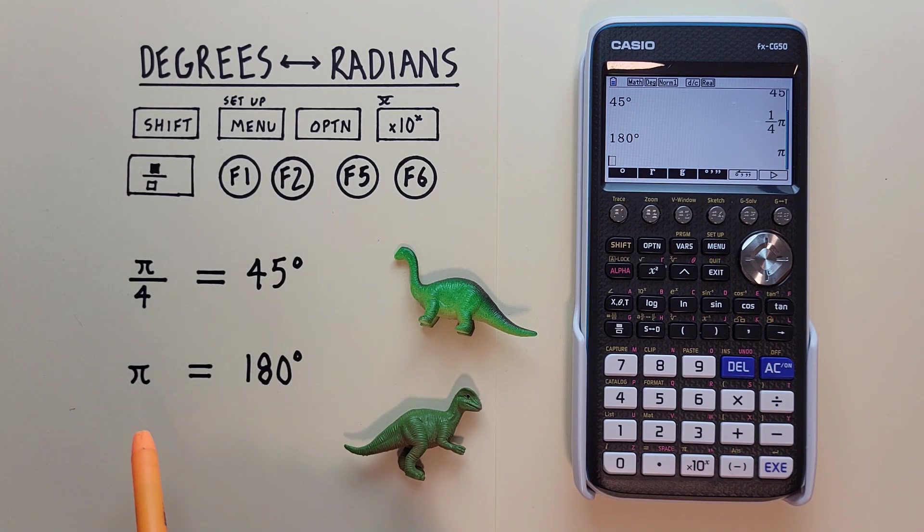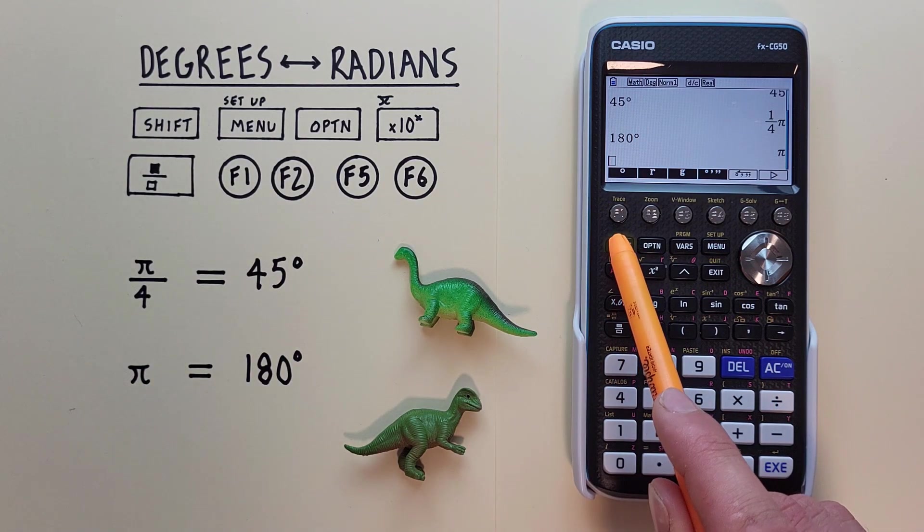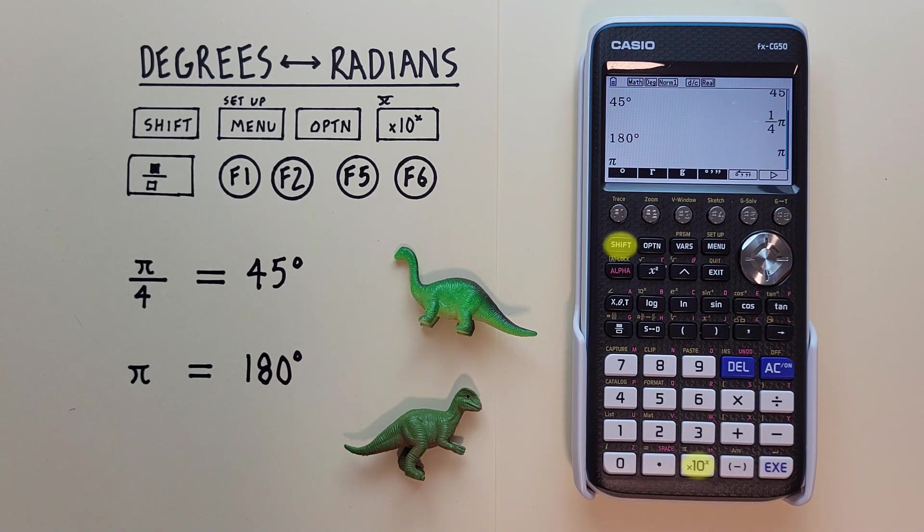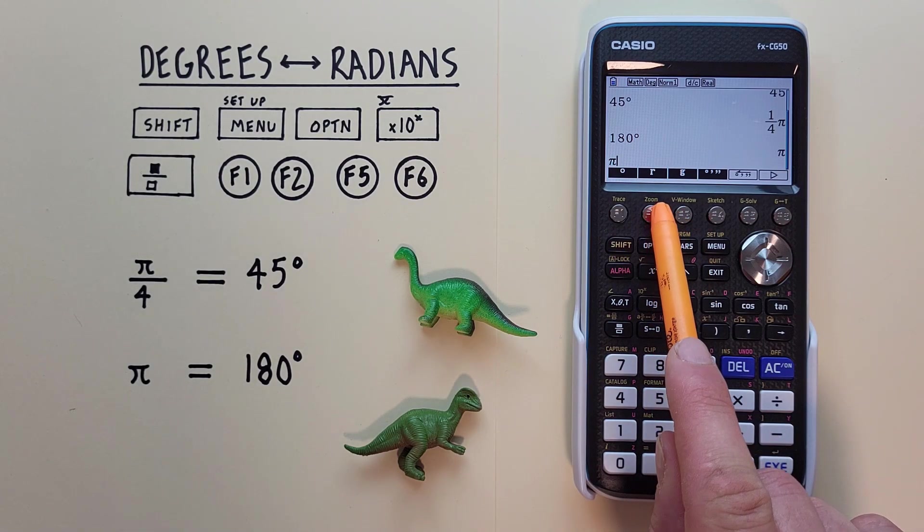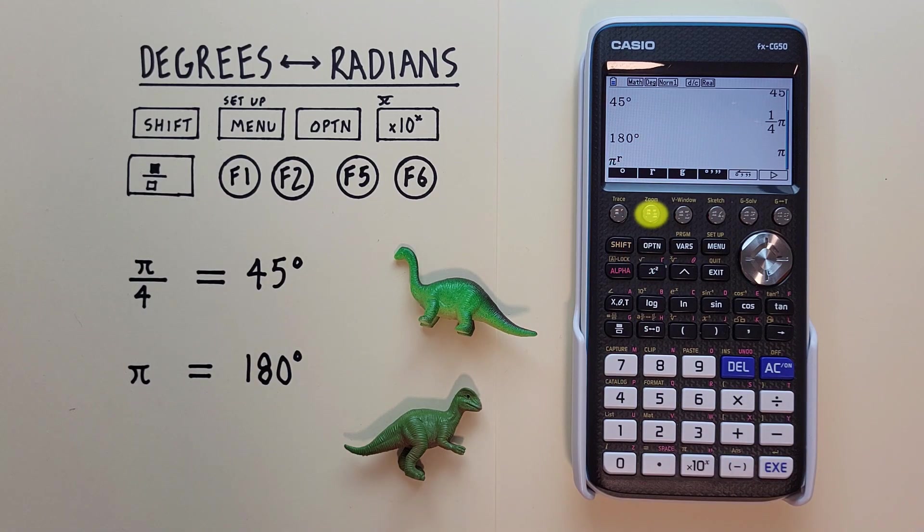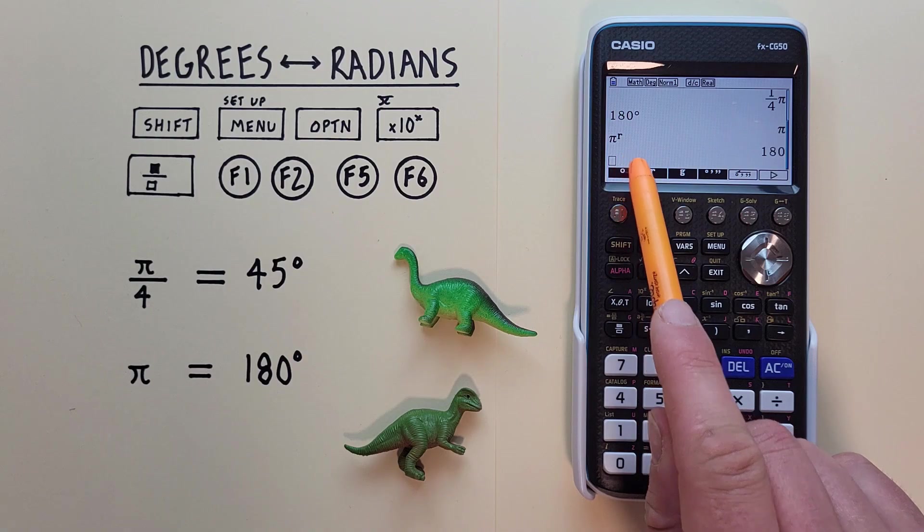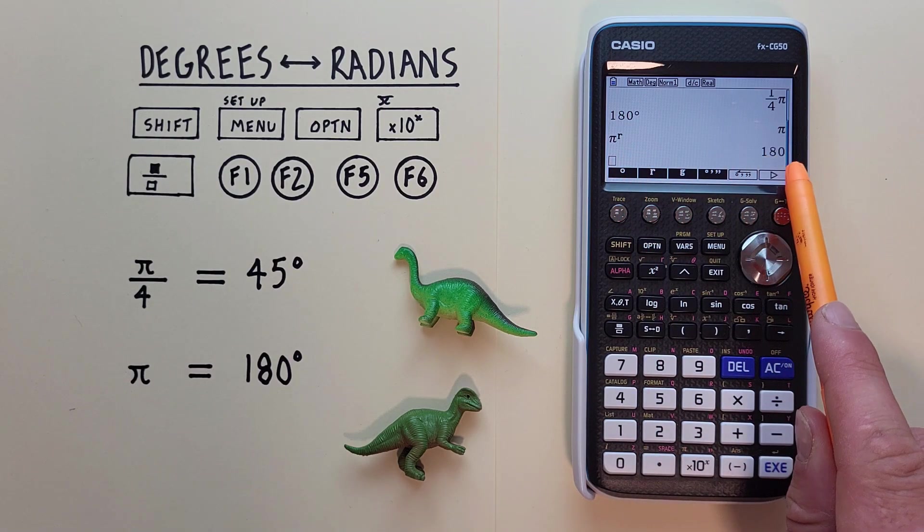Now we can enter our pi. And again, tell our calculator these are radians. And hit EXE. And see we get pi radians is equal to 180 degrees.